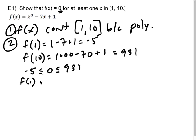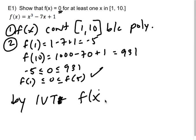So sure enough, negative 5 is less than or equal to 0, which is less than or equal to 931. Or if you want to write it this way, you can write f(1) is less than or equal to 0 is less than or equal to f(10). I don't care. So second thing I had to show is that zero is between the two points. So by the IVT,